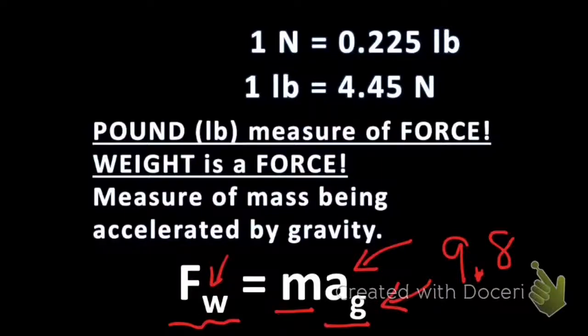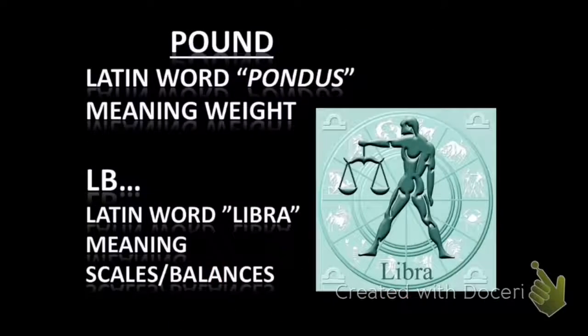So you can actually calculate your weight in newtons if you know your mass in kilograms. The word pound comes from a Latin word that means weight, but the abbreviation for pound, LB, comes from a Latin word, Libra, which means scales.